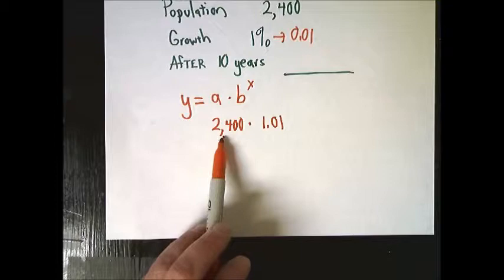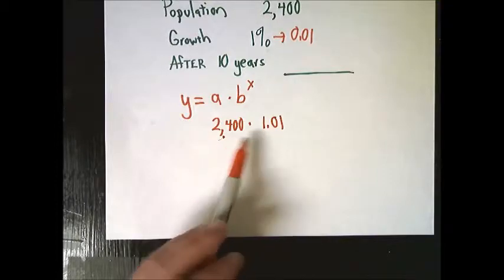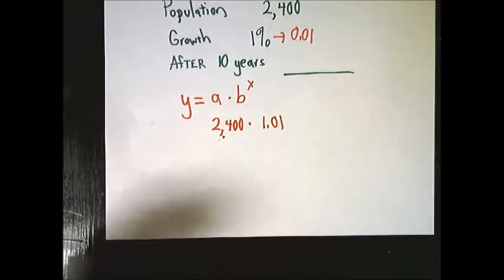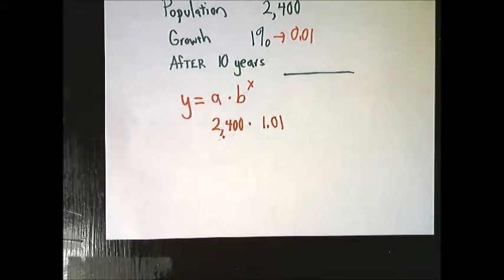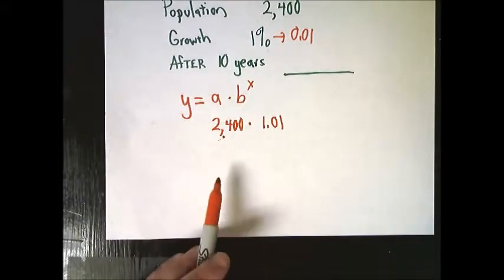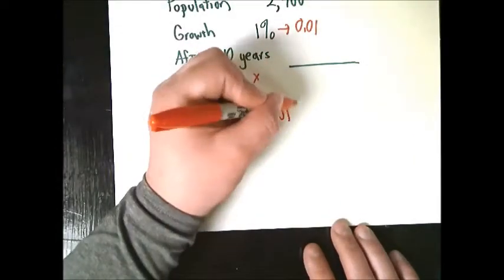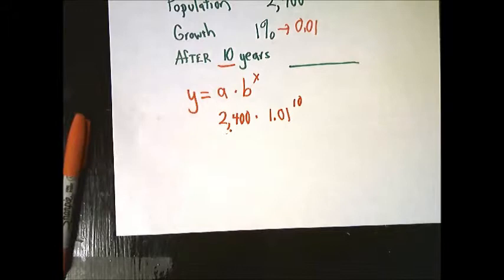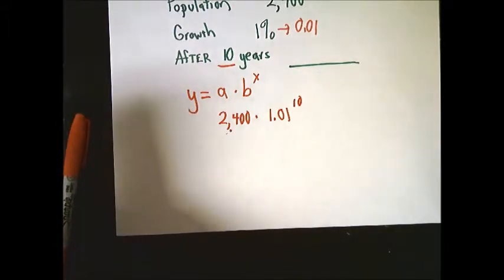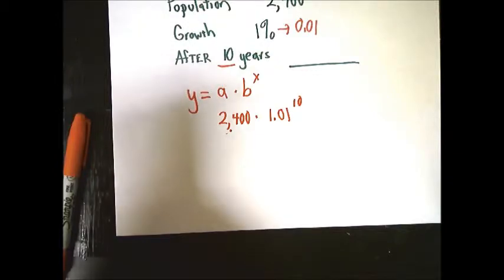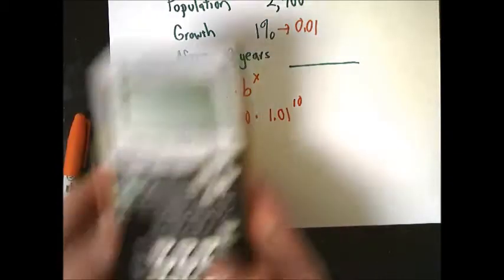That way I'm considering in my multiplication the original amount as well. Otherwise, it'll just give me what 1% of this is in the second year, but that's not very helpful. I want to know what the total amount is. I want to know what the total amount of people in the town is. And the 10 years, of course, would be the part that changes. So I can do the exponent part first, just because order of operations says so.